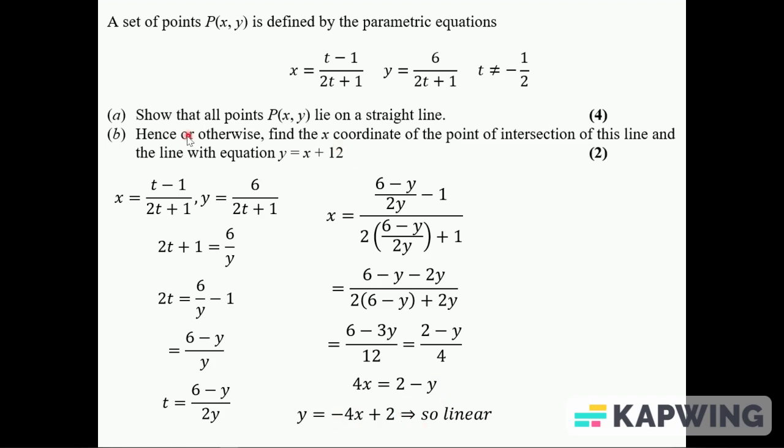And then hence or otherwise find the x-coordinate of the point of intersection. So we're going to solve these simultaneously, so we put them equal to each other. Sometimes you'd sub these parametrics into y equals x plus 12 and then find out what t is and sub back in. But there's no need here because pretty basic straight line equations. And this just gives you x equals minus 2.